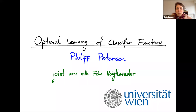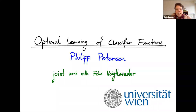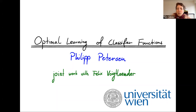Hi everybody, welcome to the One World Minds talk of Philippe Petersen. Philippe did his PhD in Berlin and then went to do a postdoc in Oxford, and since 2019 he's assistant professor at the University of Vienna. We are very happy that he will tell us something about optimal learning of classifier functions.